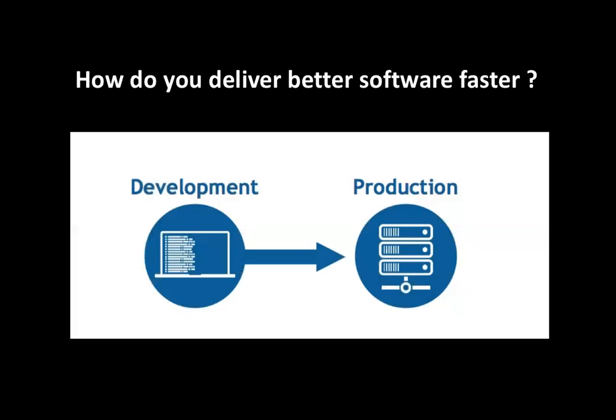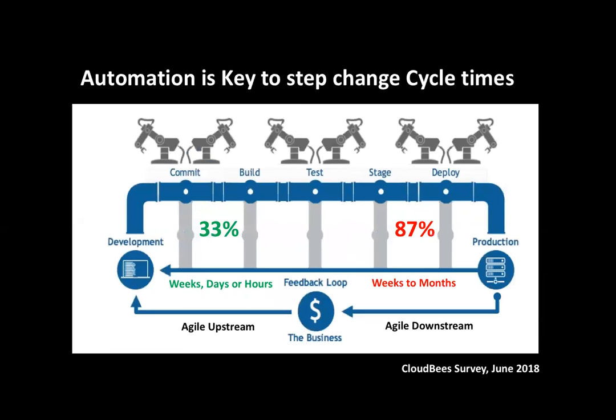It's all about how you move that code — that valuable asset, that set of capabilities developers have built — from development into production. How do you deliver that software faster, with speed and safety, with quality in mind? One key concept that's emerged is pipelines, taking you from the development side all the way through to production, with a set of stages and gates you must move through — from committing code from the developer's laptop into a source code repository like GitHub.